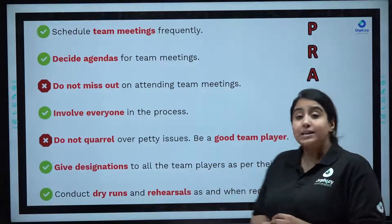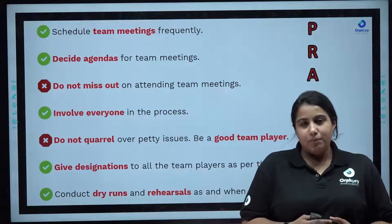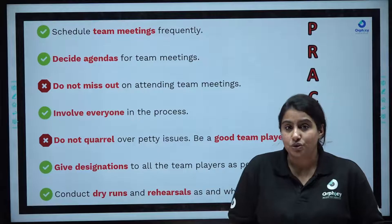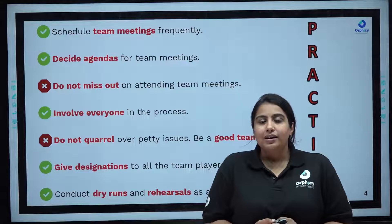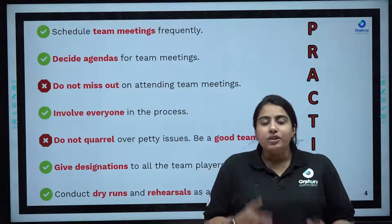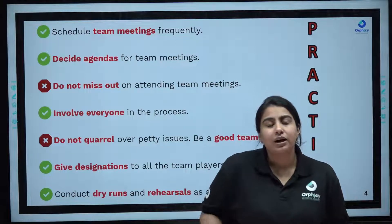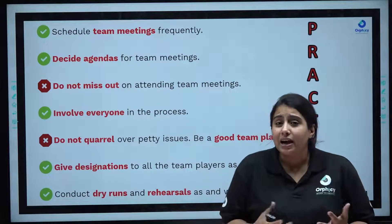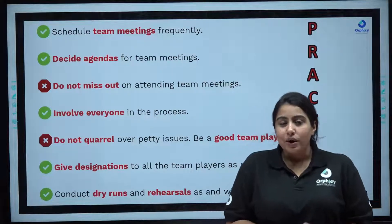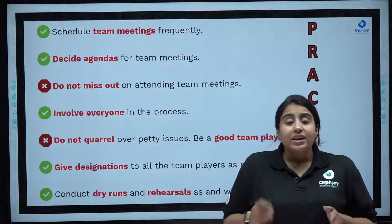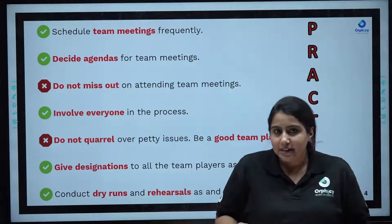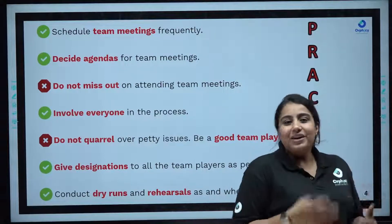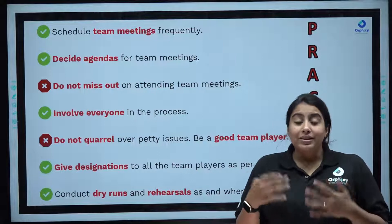Give designations to all team players as per their role. When team members present, they give themselves designations. If I am going to talk about marketing strategies, I will designate myself as CMO — Chief Marketing Officer. If someone takes care of the technical part, they can be a CTO — Chief Technical Officer. Someone who came up with the idea and executed the entire plan can be called CEO — Chief Executive Officer. There are also COO, CHRO, and many different designations you can attach and associate with team members, which gives a very formal and professional feel when the sharks see your presentations.